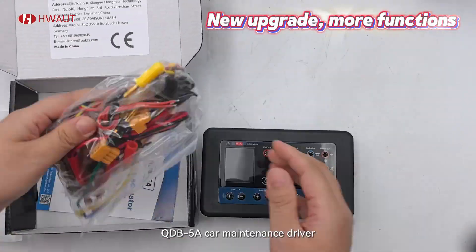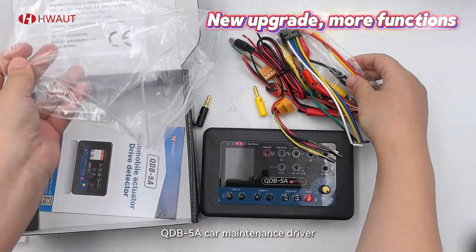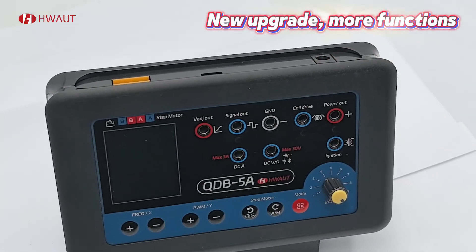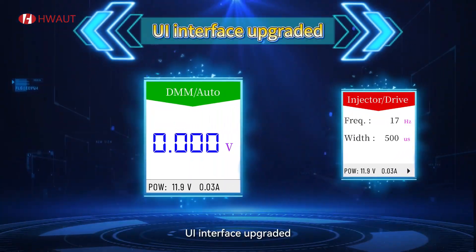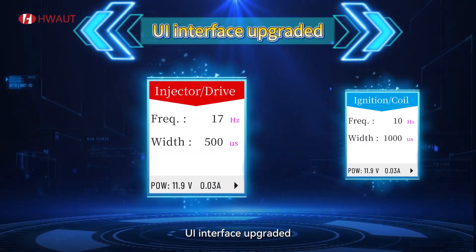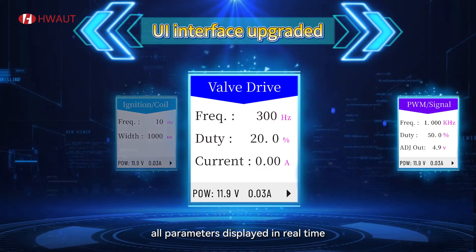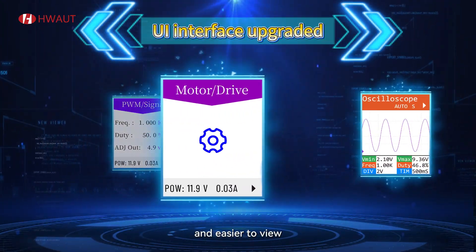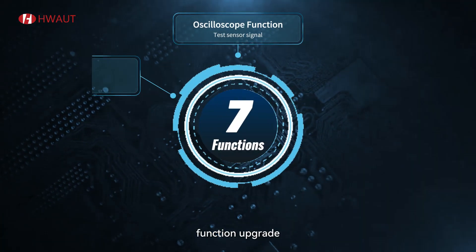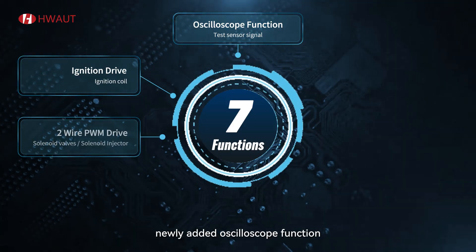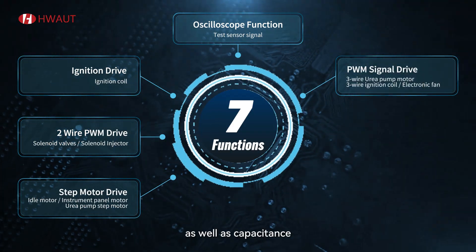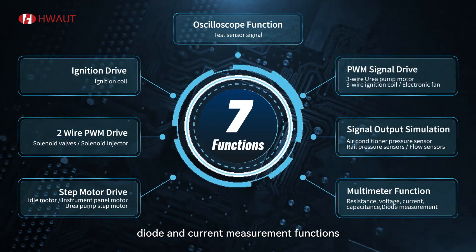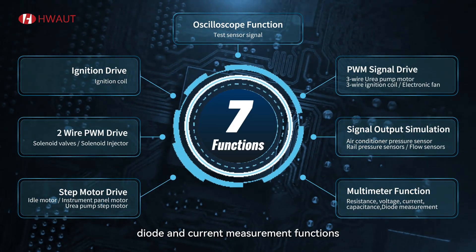HUED B5A Car Maintenance Driver, newly upgraded with more functions. The UI interface has been upgraded, with all parameters displayed in real time and easier to view. Function upgrades include the newly added oscilloscope function, as well as capacitance, diode, and current measurement functions.